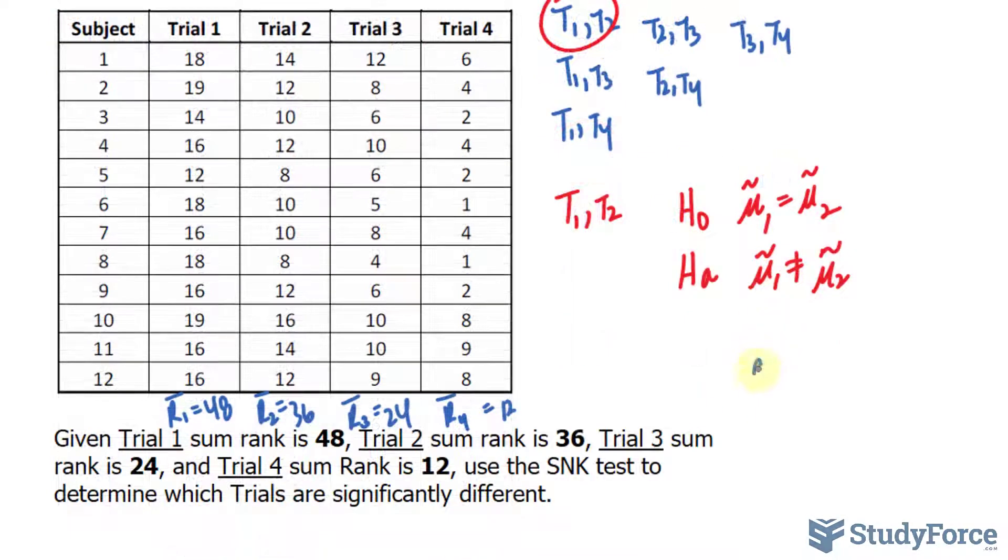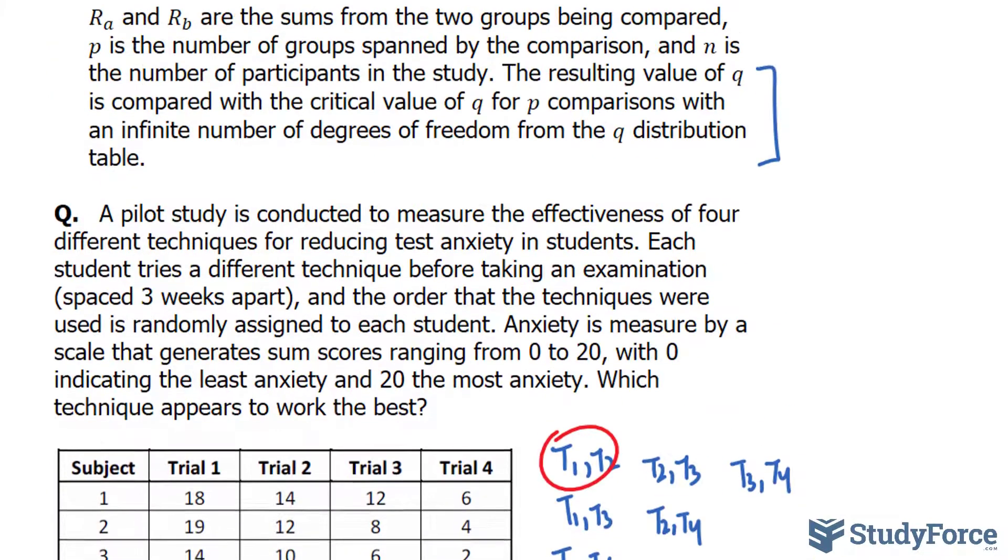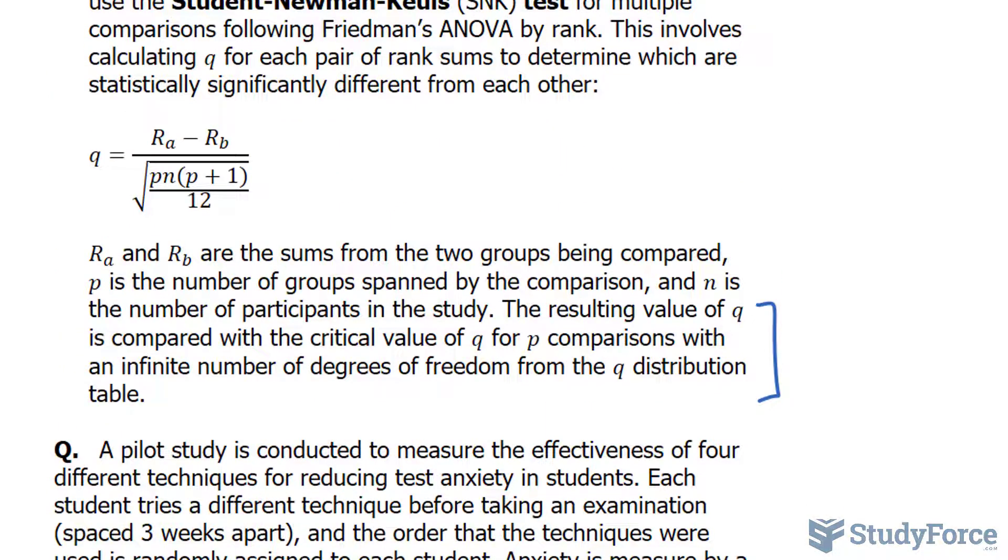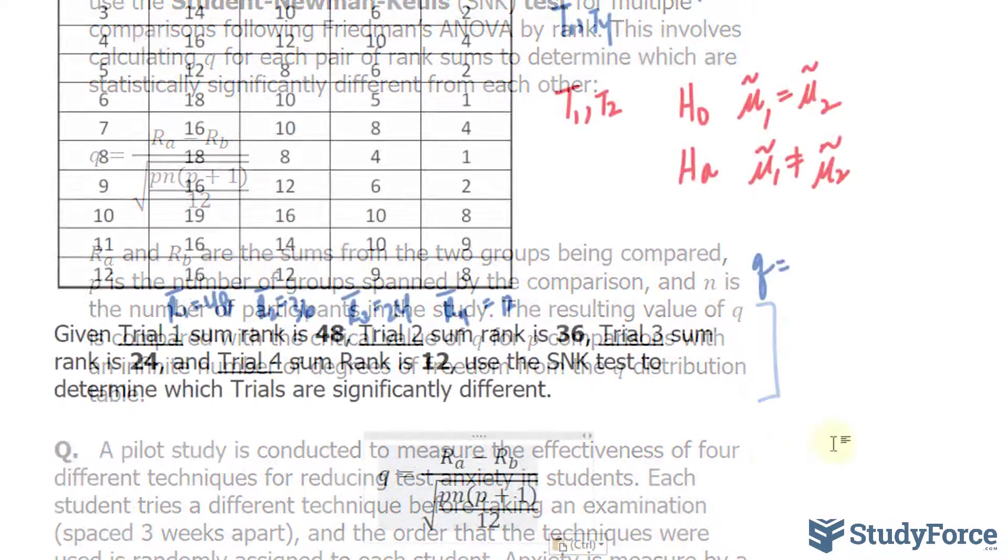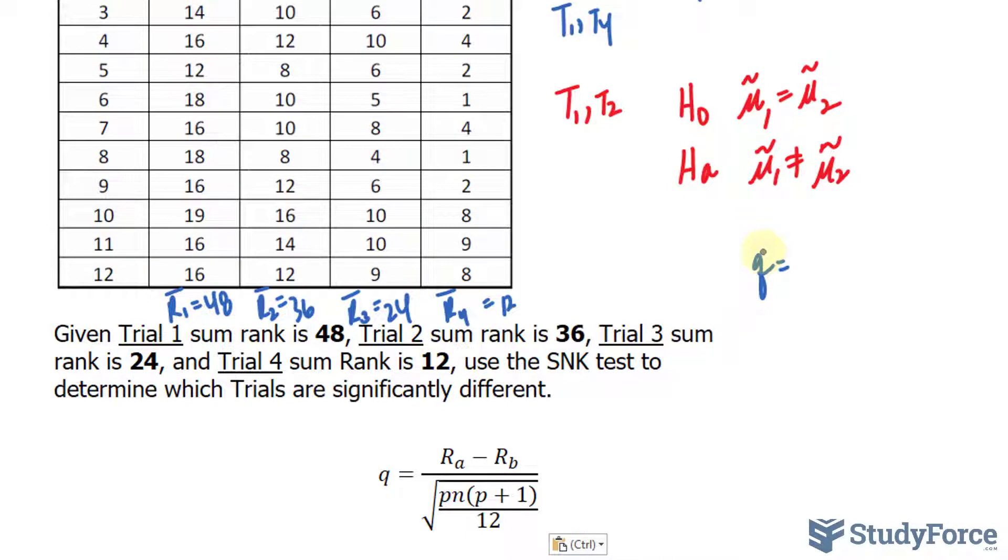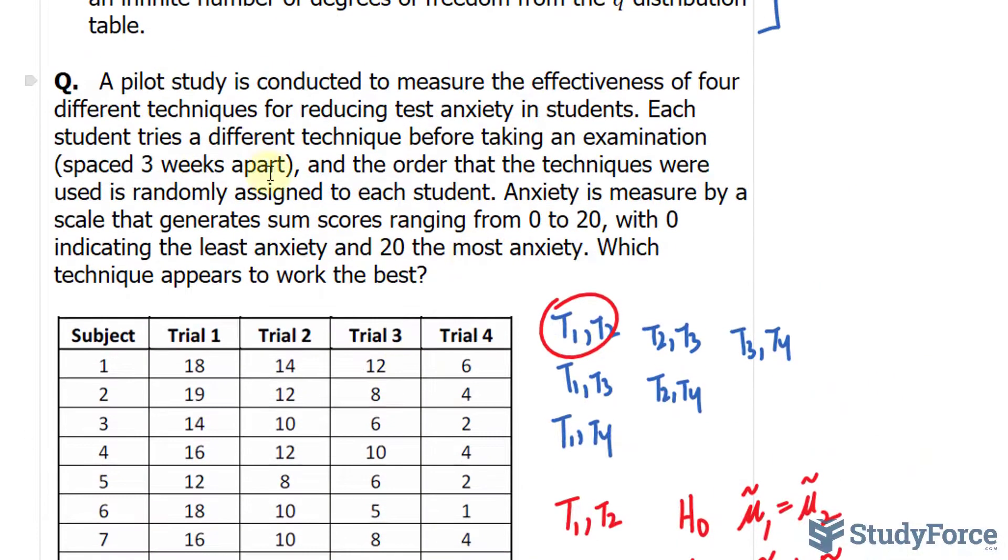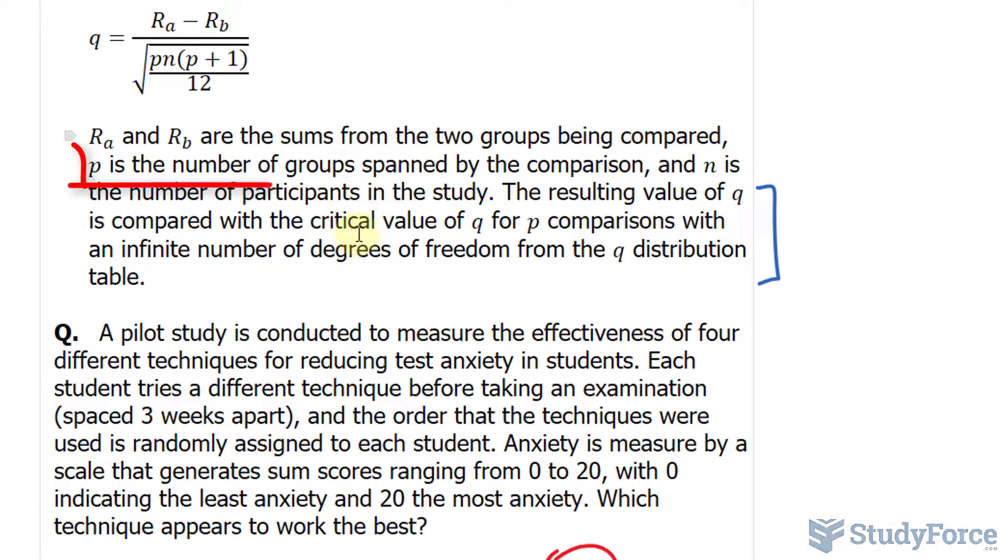Now we can calculate Q. Remember, the formula for Q is shown on your screen. I will copy and paste it underneath here for simplicity. R A minus R B: R A being 48 minus 36 over, and we have the square root of P. Now P represents, as stated up here, it represents the number of groups spanned by the comparison.